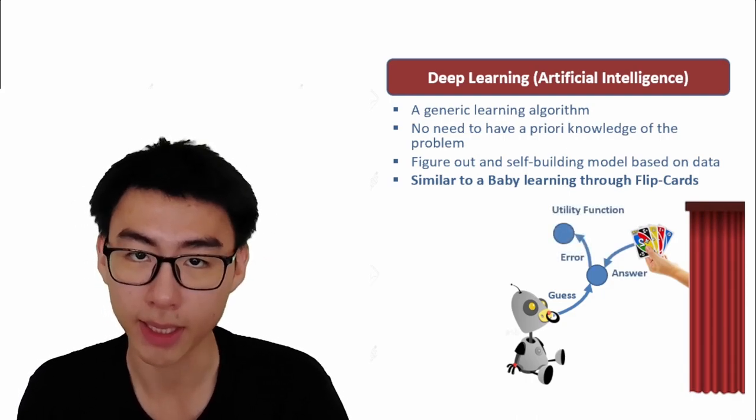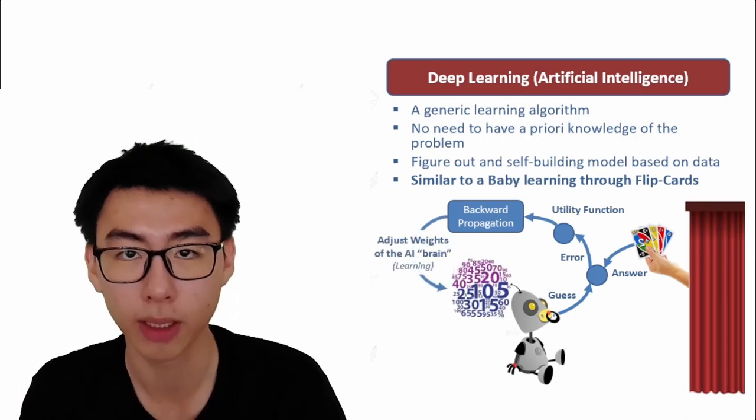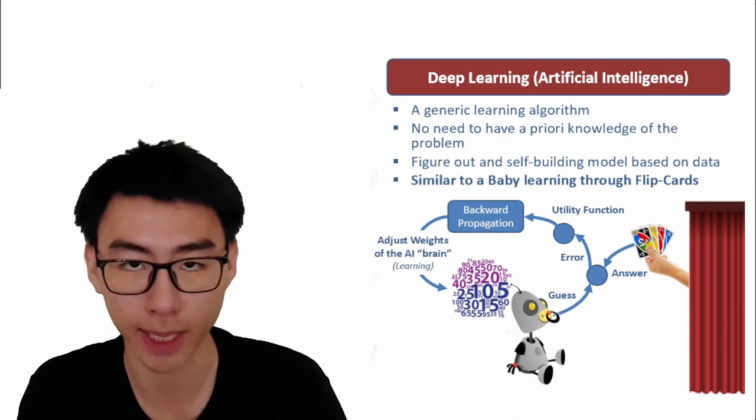The error of the guess is fed through the utility function through backward propagation to adjust the weights of the AI brain, allowing it to learn from its mistakes and improve its guess.